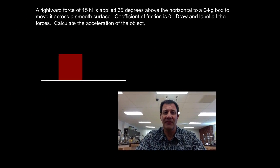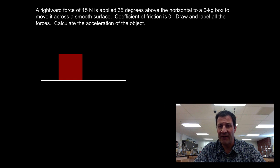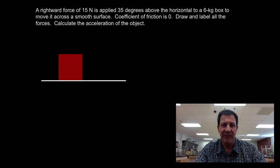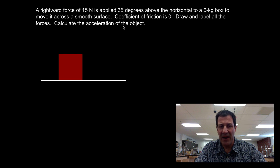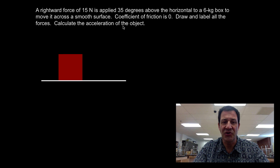Here's the situation: it's a rightward force, 15 Newtons, applied 35 degrees above the horizontal. There's a box that's 6 kilograms, moving across a smooth surface. The coefficient of friction is zero, so there's no friction. We want to label all the forces, calculate the magnitude of the forces, and calculate the acceleration of the object.